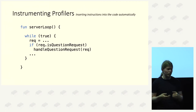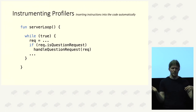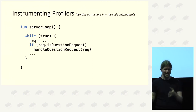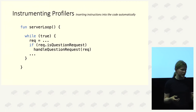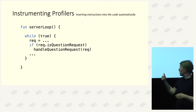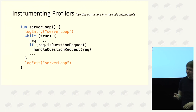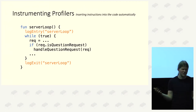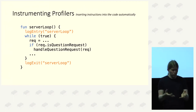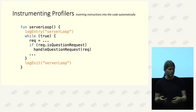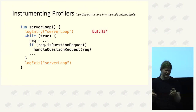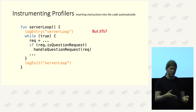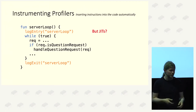An instrumenting profiler works by inserting instructions automatically at runtime in your code. For example, here we have our server loop — it inserts at the beginning, 'we're starting the server loop method,' and at the end, 'we're exiting this method.' That's quite nice — it works properly and is easy to understand. The main problem is JITs don't like it and inlining doesn't like it. Essentially, you're not measuring the system you actually want to measure — you're measuring a different system.